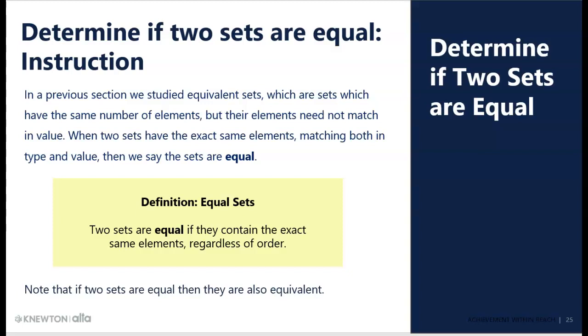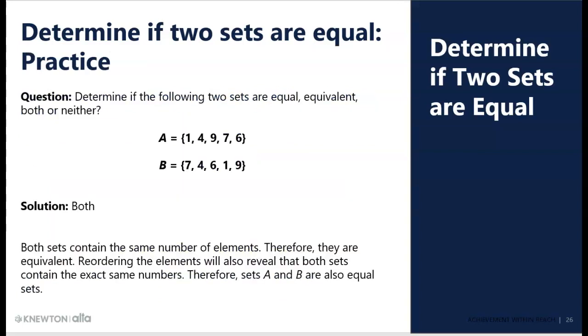So, this is important. Equal does not mean the same as equivalent. Now, it turns out that if two sets are equal, they must also be equivalent. It's not possible to have two sets that are equal if the two sets are not equivalent. But equal is a stronger relationship. It means they are exactly the same elements, regardless of order. So, if they're equal and they have the same elements, they must have the same number of elements, and that's why equal implies equivalence. Sets can be equivalent without being equal, but they cannot be equal without being equivalent.